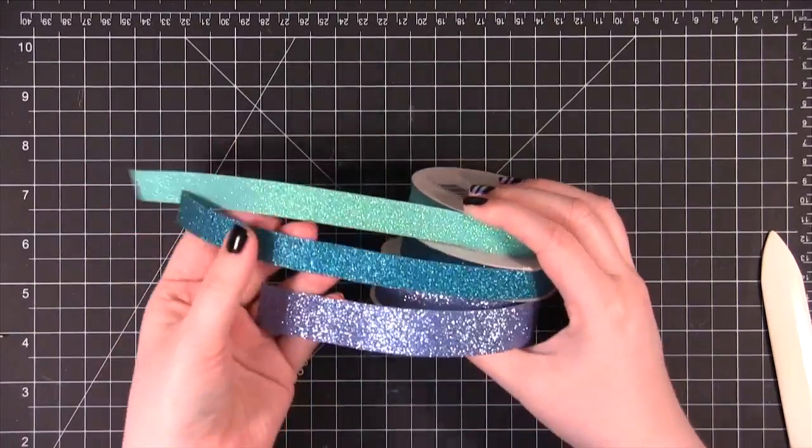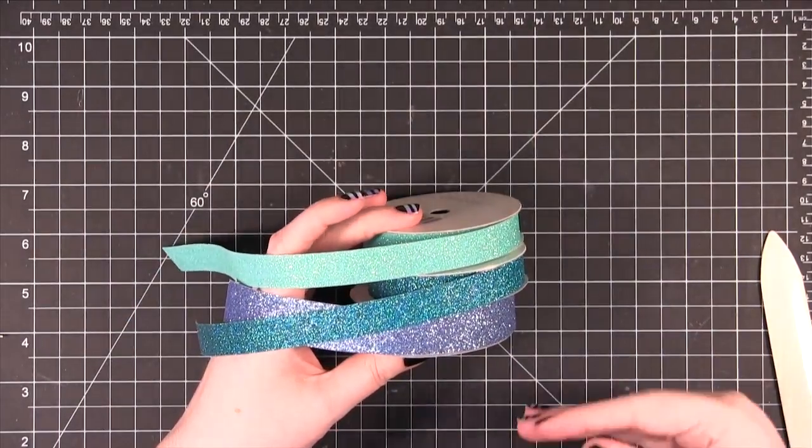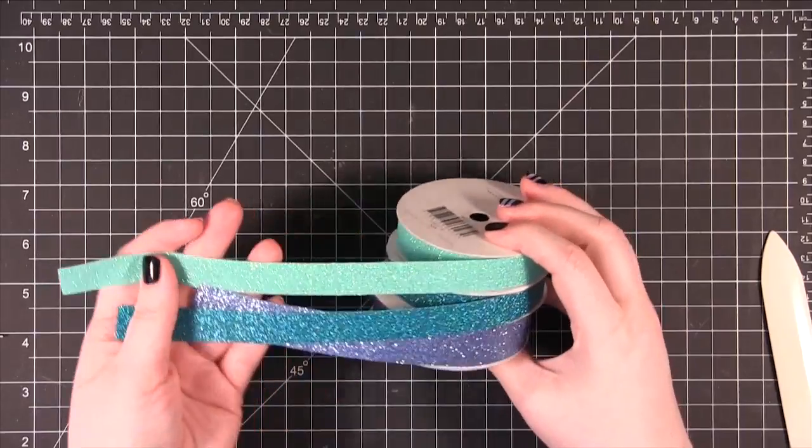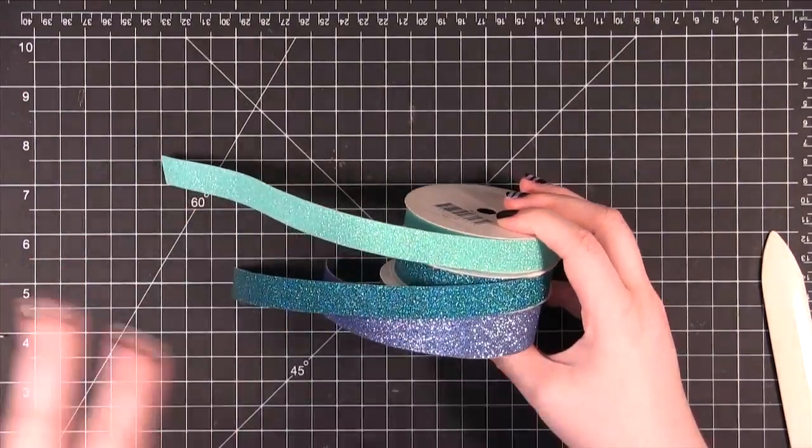These glitter tapes are available at simonssaysstamp.com. They come in a set with a bunch of different colors so you can definitely do a card like this that I'm doing today because you only need multiple colors and with that pack you get a ton.